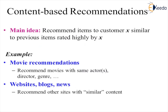The main idea of content-based filtering is to recommend items to customer X that are similar to previous items rated highly by X. It is focused on a single customer based on their own likes and dislikes. For example, movie recommendations suggest movies with the same actor, director, and genre.